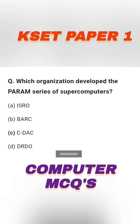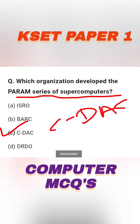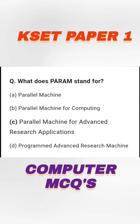Which organization developed the PARAM series of supercomputers? The options include ISRO, BARC, CDAC, and DRDO. The right answer is option C — CDAC. CDAC is the organization that developed the PARAM series of supercomputers.